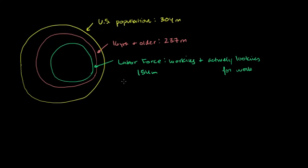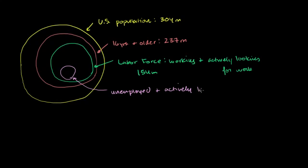Although the numbers here aren't so important, the more important thing is the idea of how the unemployment rate itself is calculated. And then within the labor force, you have a subset that is actively looking for work — they don't have a job, but they are actively looking. So this right here is unemployed and actively looking. This actively looking is probably more important than you might realize at first. And this number, let's just say for the sake of argument, is sitting at around 15 million people.